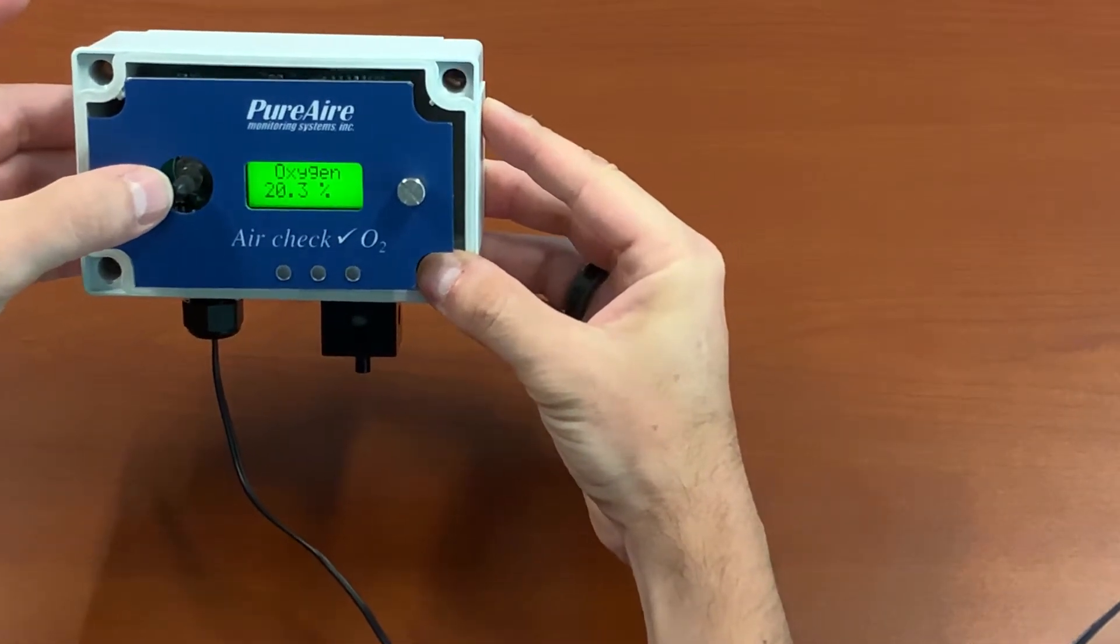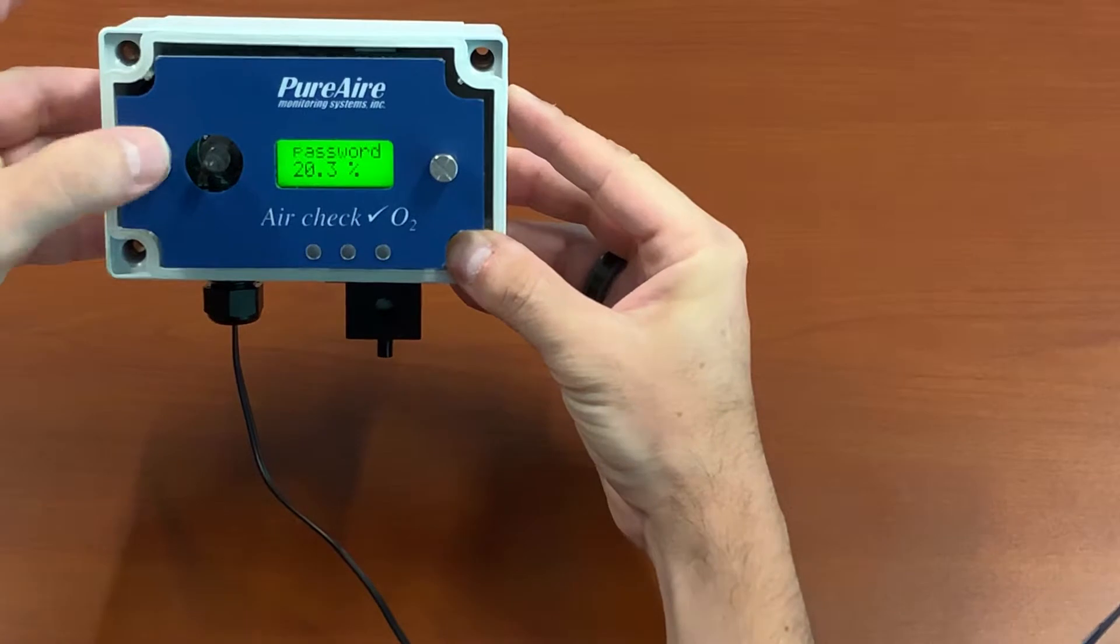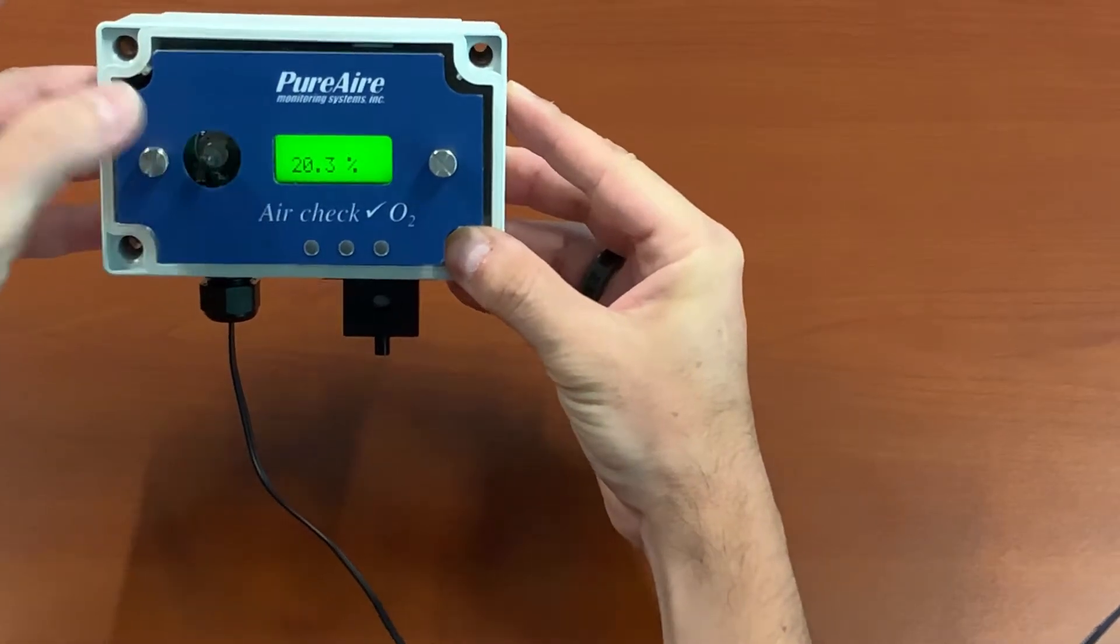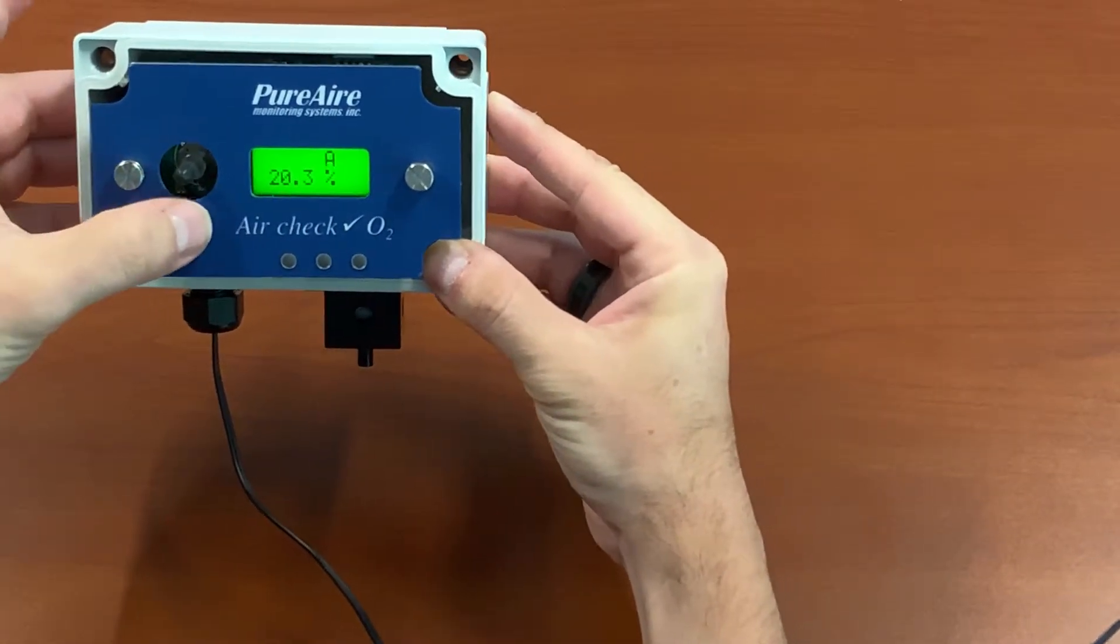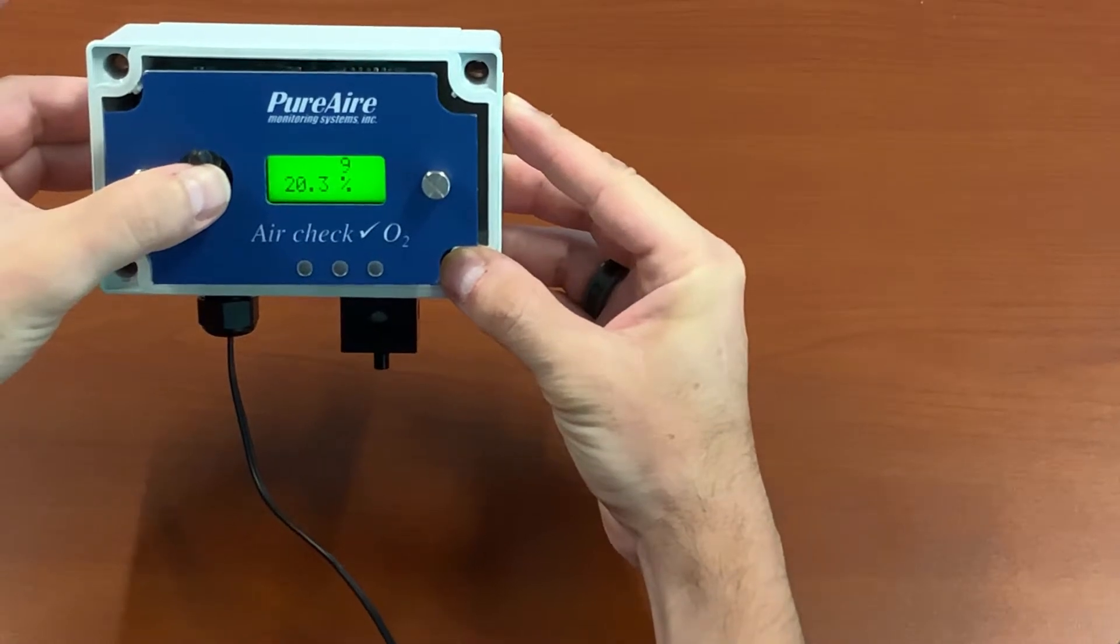First thing you're going to do is move your joystick to the right one time. It's going to say enter password. Move it to the right again, and you get your flashing A. You're going to hold up on the joystick until you get to the number five.